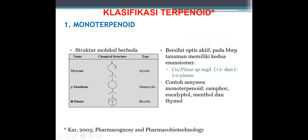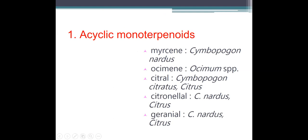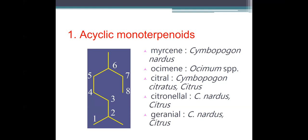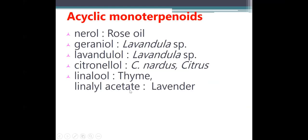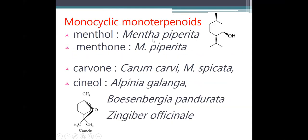Monoterpenoid dan sesquiterpenoid ini banyak terdapat di minyak atsiri. Kalau Anda ingin mencari monoterpen dan sesquiterpenoid, pasti di situlah terdapat minyak atsiri. Ketika Anda melakukan skrining fitokimia, selalu dilakukan uji monoterpen dan sesquiterpenoid — salah satunya untuk menandakan ada tidaknya minyak atsiri di dalam bahan Anda. Ini adalah struktur monoterpenoid — ini ada 2 isoprene. Setiap ada cagak kemungkinan itu adalah kepala, itu dikatakan sebagai isoprene. Dan isoprene ini ada yang asiklik, tidak memiliki cincin; ada yang memiliki 1 cincin; dan ada yang lebih dari 1 cincin.